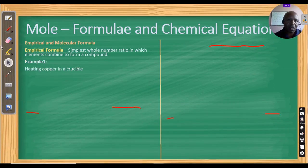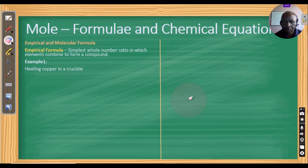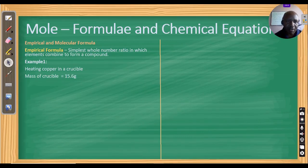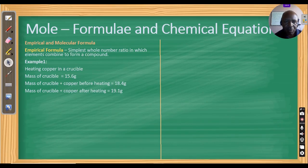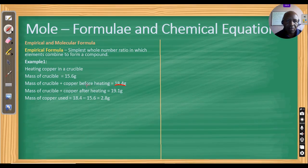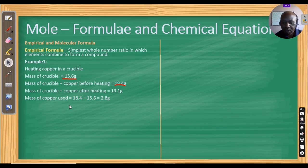We look at an example in the form of an experiment: heating copper in a crucible. The crucible without anything weighed 15.6 grams. After adding some copper it became 18.4 grams. After heating the copper in the crucible, the total weight became 19.1 grams. So the mass of copper used is 18.4 − 15.6 = 2.8 grams.